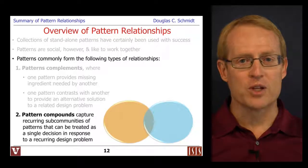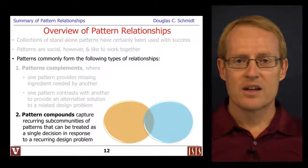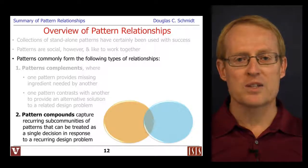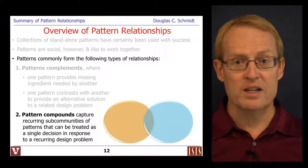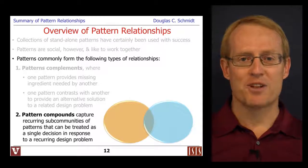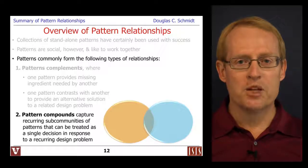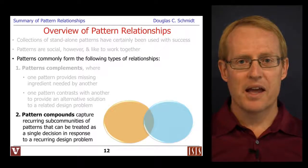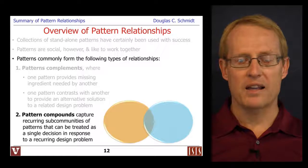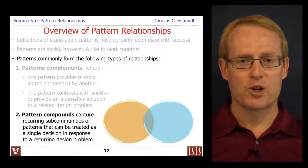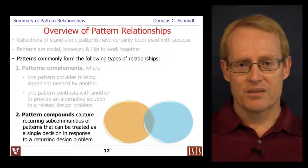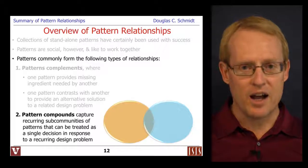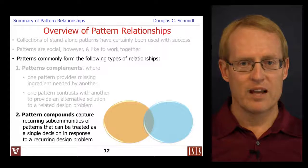Another form of pattern relationship is called a pattern compound. Pattern compounds capture recurring sub-communities of patterns that can be treated as a single decision in response to a recurring design problem. Going back to our batch method example, it can actually be described as a pattern compound combining the composite pattern with the command pattern — both Gang of Four patterns. So we can look at batch method as either a pattern complement to iterator, or as a pattern compound built out of more basic Gang of Four patterns.